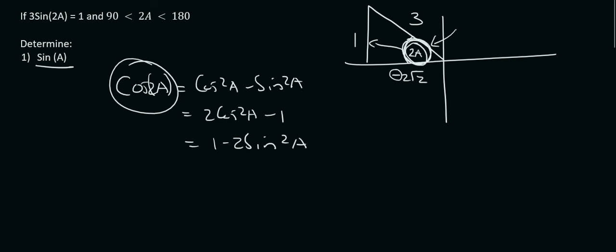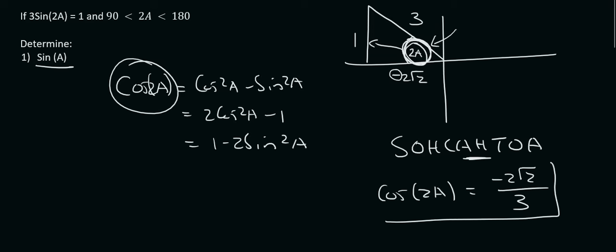And cos 2A we can get very easily from the triangle. Why? Because the angle already is 2A. So let's get cos from that triangle by just using SOHCAHTOA, where we see that cos is adjacent over hypotenuse. So we can say that the cos of 2A is equal to the adjacent, which is negative 2 root 2, over the hypotenuse, which is 3. So now we have cos 2A.